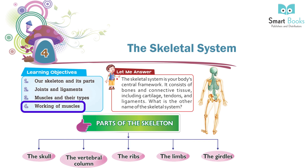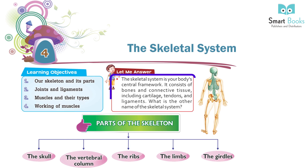Working of muscles. The skeletal system is our body's central framework. It consists of bones and connective tissue, including cartilage, tendons and ligaments. What is the other name of the skeletal system?